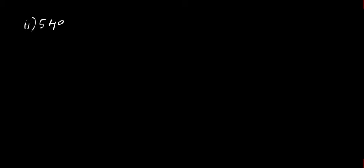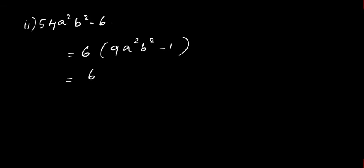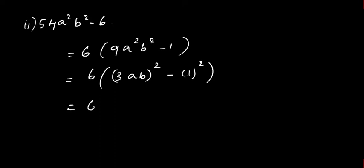Second question: 54a²b² - 6. We can take the number 6 as common, so we have 9a²b² - 1. Now 9a²b² can be written as (3ab)² minus 1², so again this is of the form a² - b². Expanding, we get 6(3ab + 1)(3ab - 1).